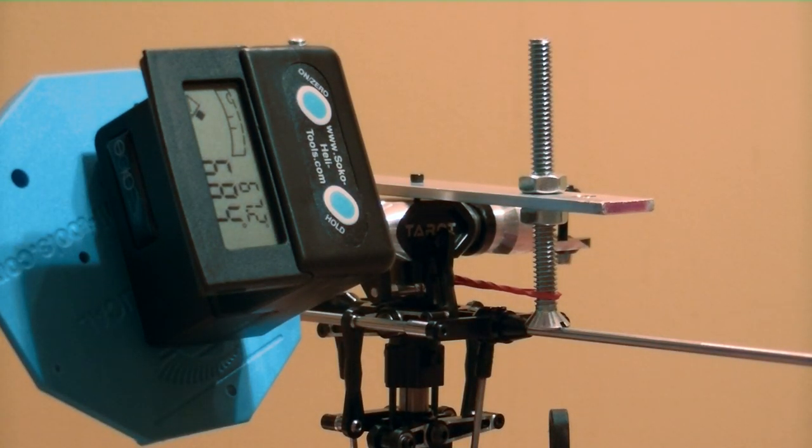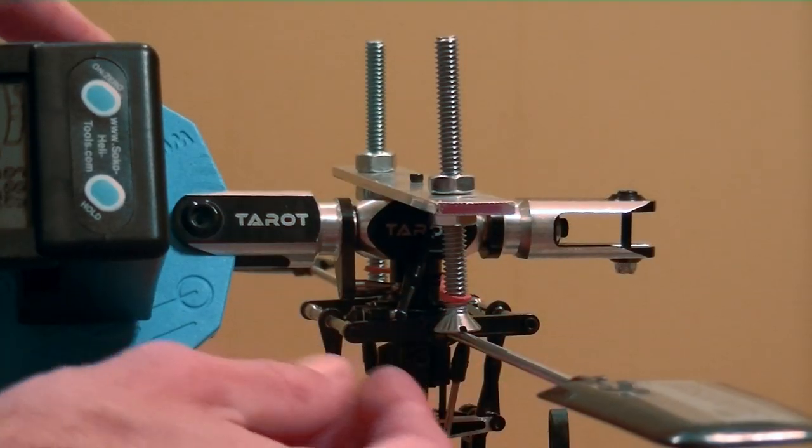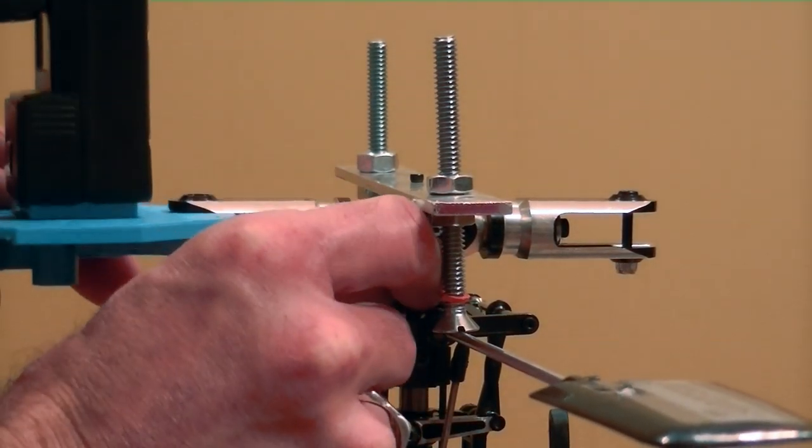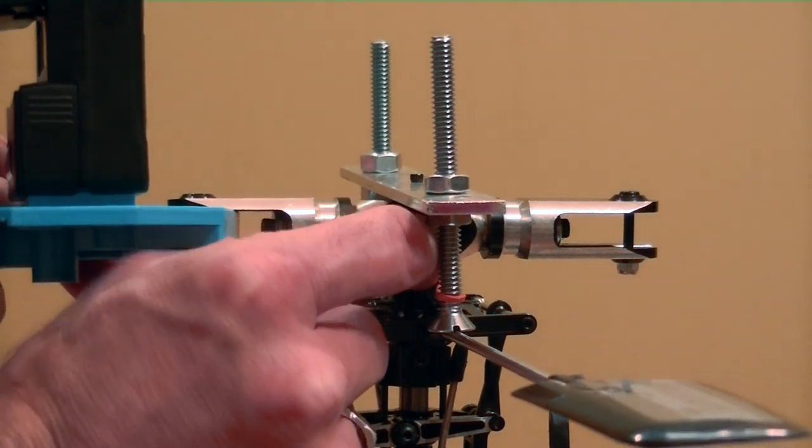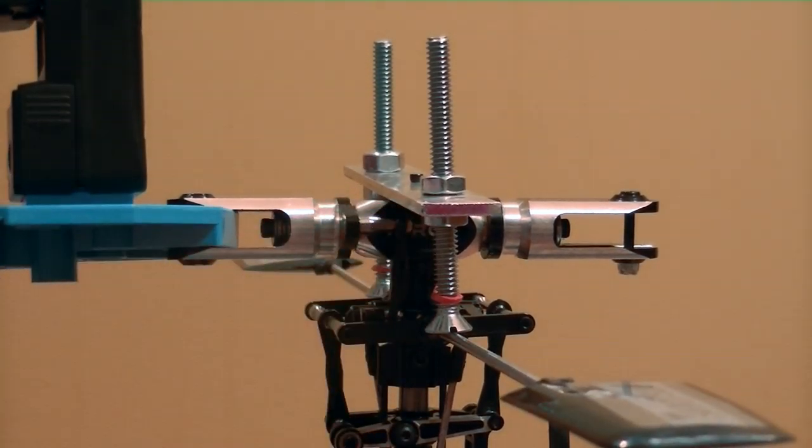The first thing we want to do to prepare for the next part of our setup is to reattach the link to the blade grip. This gets us in the position that we're going to want to be in for the rest of the setup.